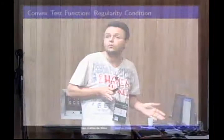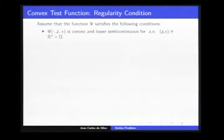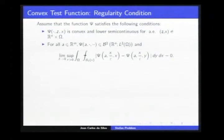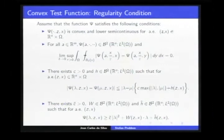Here we have an important tool for the homogenization procedure. We have a function psi that satisfies some conditions. The first condition is convexity and lower semi-continuity. The function psi also satisfies a condition necessary to allow discontinuity in the variable x in the auxiliary test function. Its growth must be at most quadratic and must be bounded below by a parabolic function whose coefficients belong to the appropriate Besicovitch space.